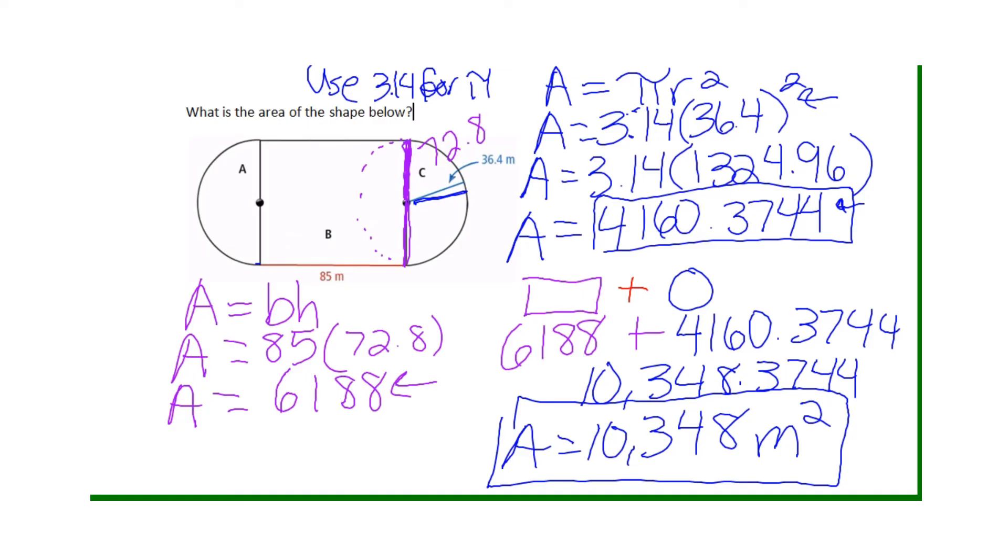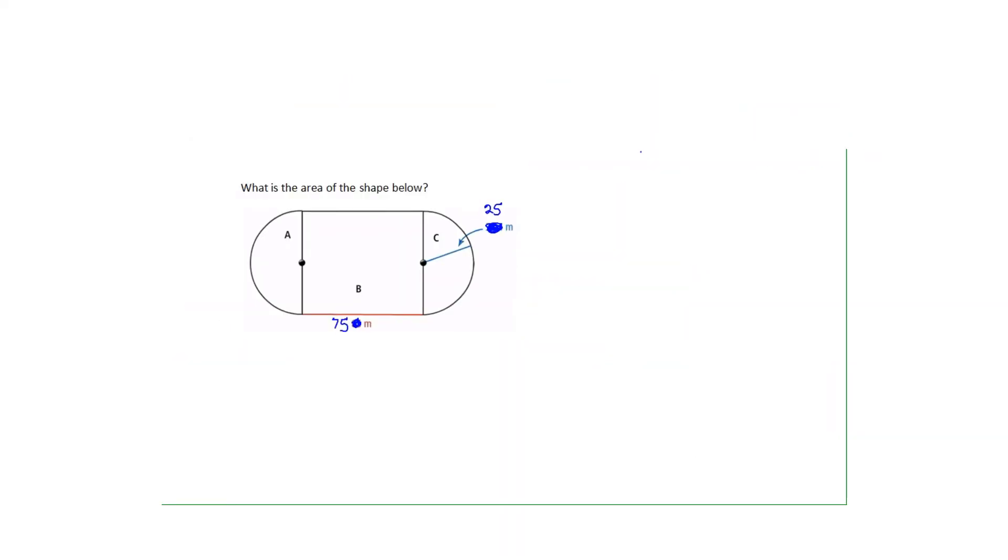Remember we had to find the area of the two semicircles, which makes one complete circle, then find the area of the rectangle, and then add it all up to get our final answer. Now I want you to pause this video and try to find the area of this shape as if the base was 75 meters and this was 25 meters. Go ahead and pause the video, work it out, and the answer will be revealed after.